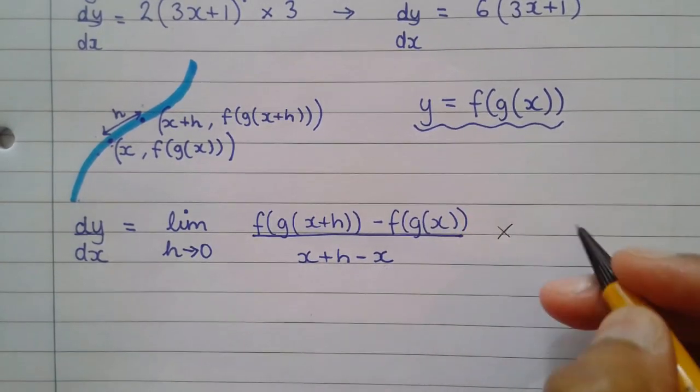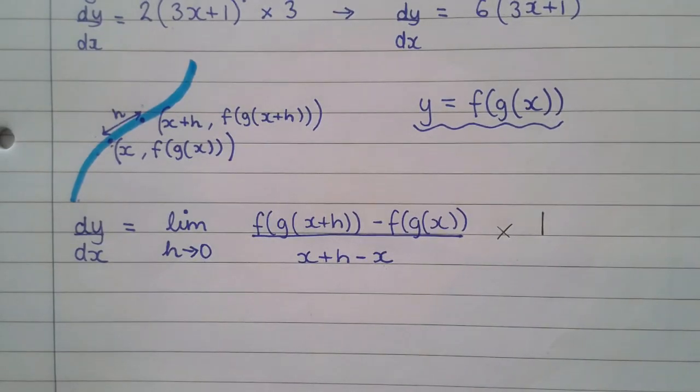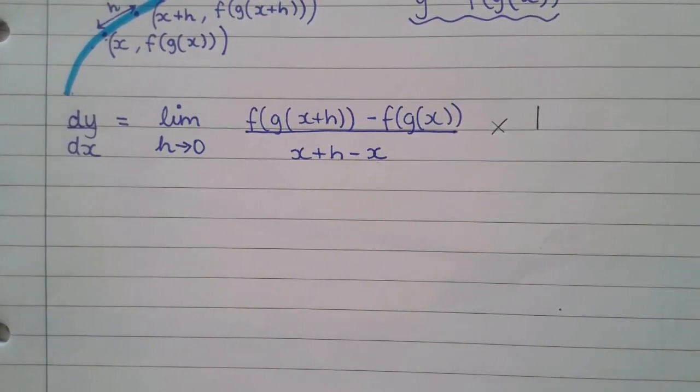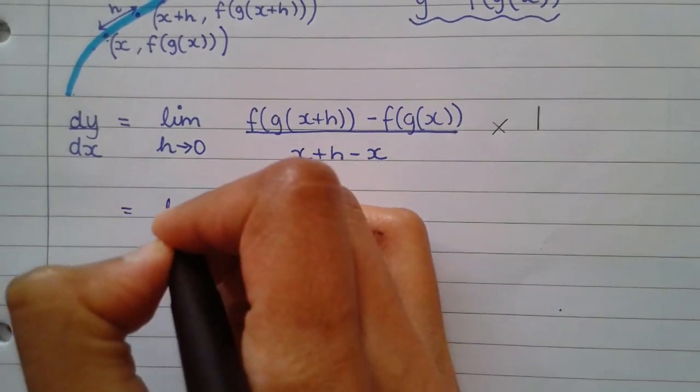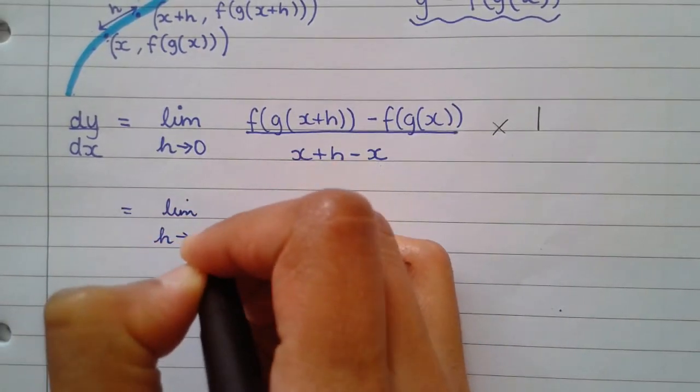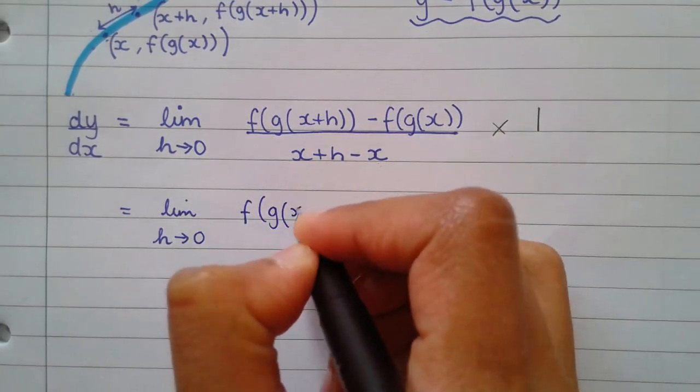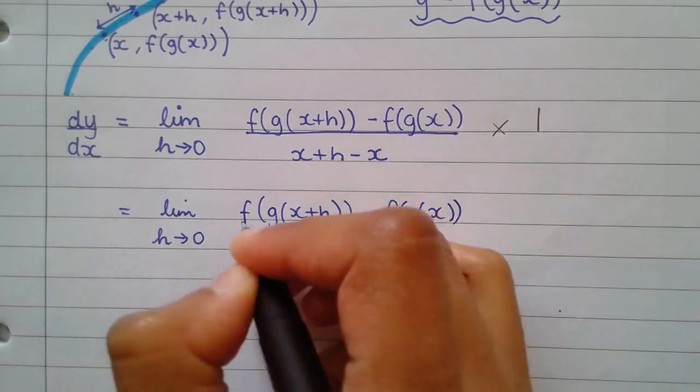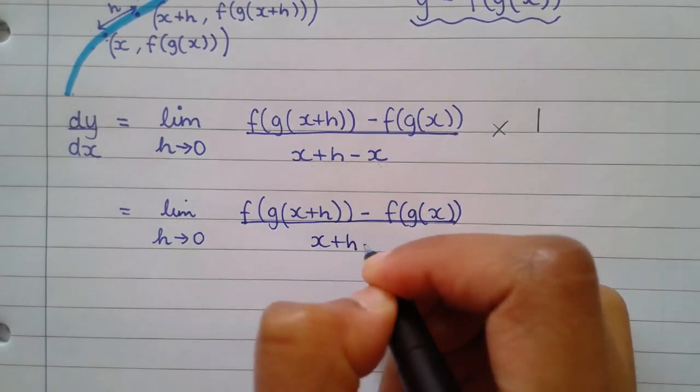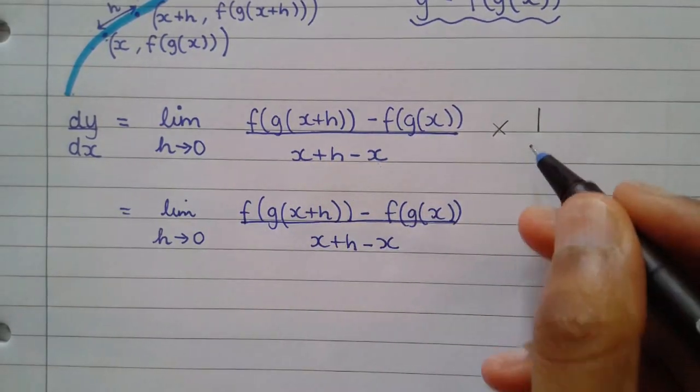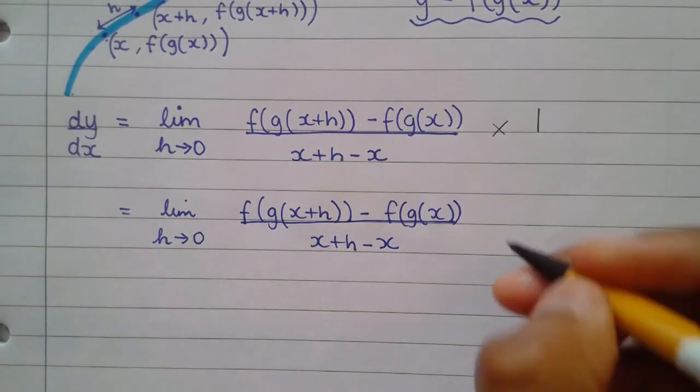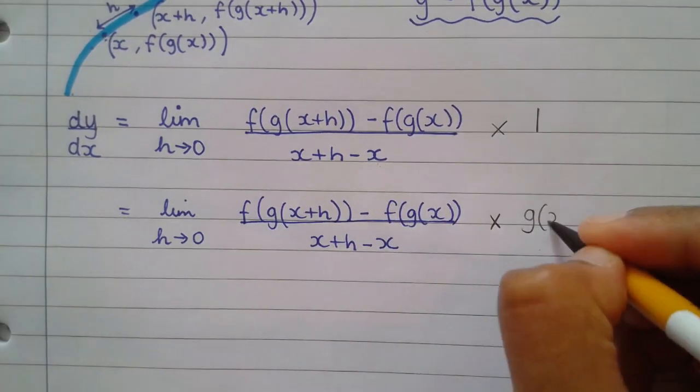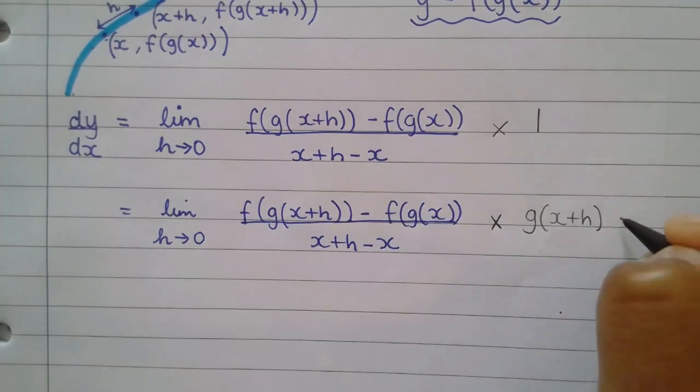So the next step is to multiply this whole fraction by 1. And now you'll ask, well, how does that make any difference? And we know that multiplying anything by 1 doesn't really change anything. Therefore, that 1 can be any expression as long as the numerator and denominator is exactly the same. So we're going to multiply by an expression. We're going to multiply with the function g of x plus h minus g of x over the same expression again.